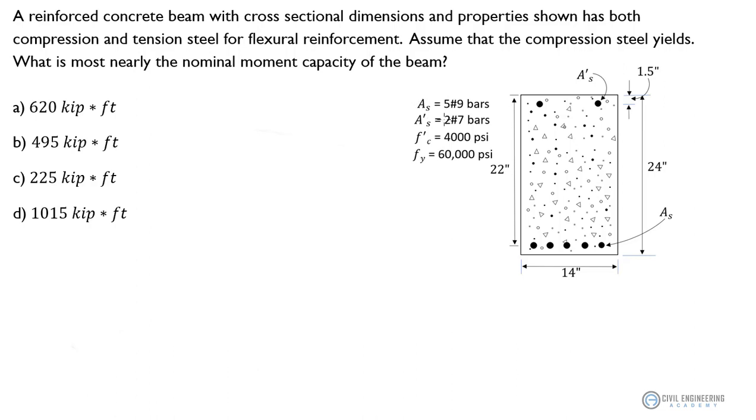We've got the A_s, which is the area of our tension steel. Looks like they've given us five number nine bars. We've got our A prime sub S, which is the area of our compression steel, and they've given us two number seven bars. And then our f prime sub C, which is the strength of the concrete, is 4,000 psi. And then we've got our yield strength on our rebar, our steel, which is 60,000 psi.